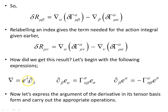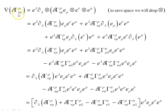To justify this result, we take the covariant derivative in the form of a basis vector times the partial derivative. Recalling that the partial derivative of a covariant basis vector and of a contravariant basis vector are given by specific expressions involving the Christoffel symbols, we can express the argument of the derivative in its tensor basis form and carry out the appropriate operation — writing it out fully in its basis form, dropping the tensor product symbol to save space.